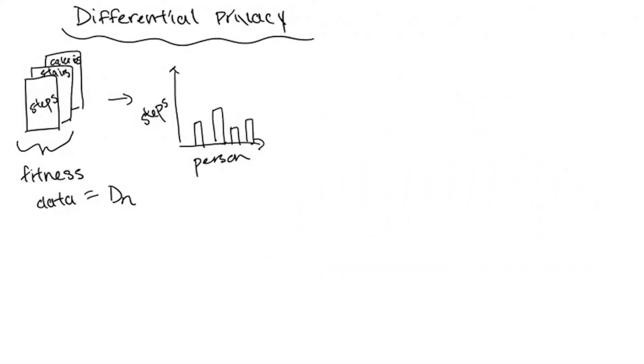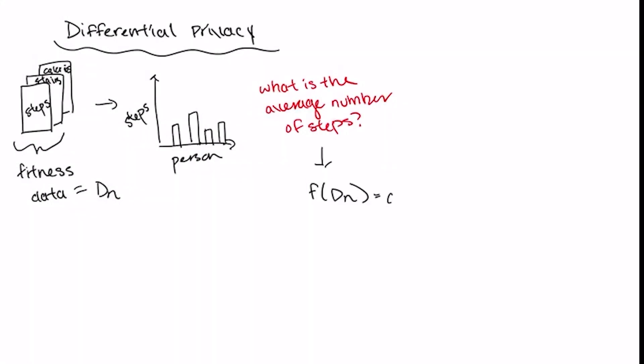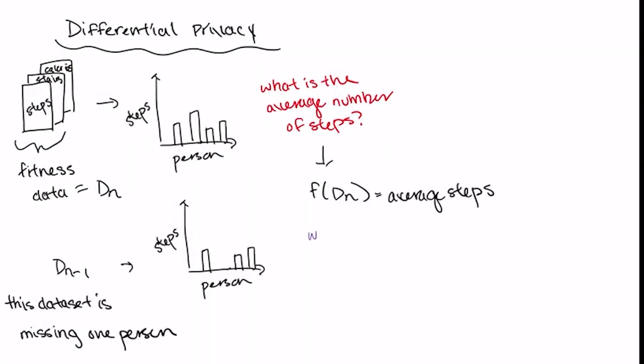Let's say we're tracking a bunch of people's fitness data on their smartphones — stairs climbed, calories burned, and more. Our goal is to be able to share information about that dataset with other people without revealing the identities of specific people we're tracking. In more mathematical terms, we have a dataset DN, and we want to share information about the patterns present in it. However, we know that someone is trying to figure out whether a specific person's information is in that dataset, and we can't let that happen.